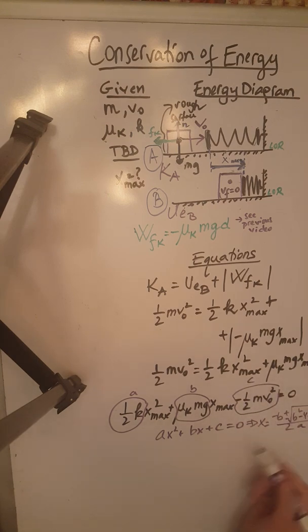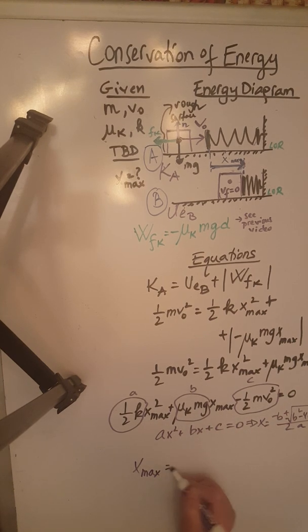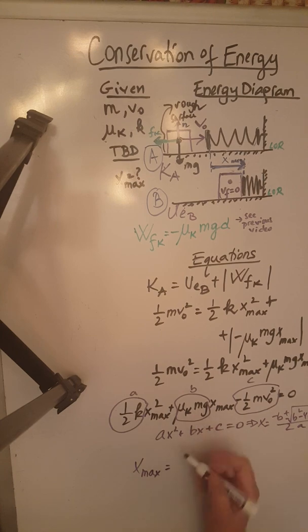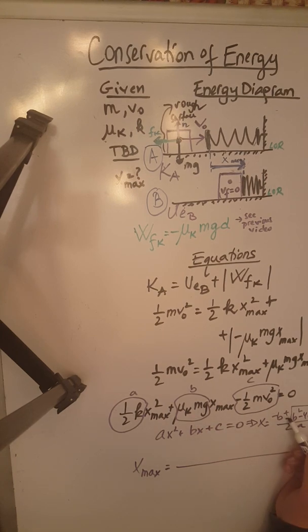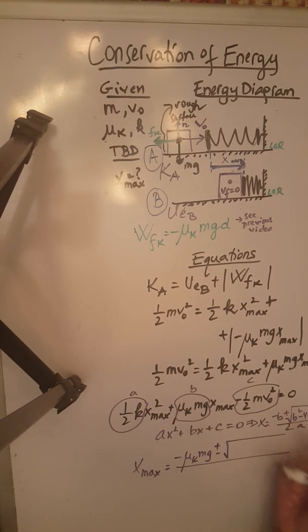So then my x, which in this case is x max, is going to be negative B. That's negative, so negative B is negative mu K M G plus or minus square root B squared, plus or minus square root B squared, which means mu K M G squared minus 4ac.